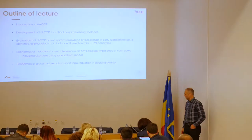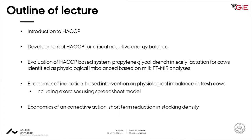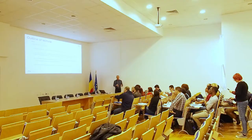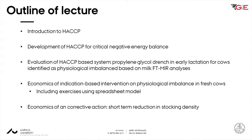The outline of the teaching is that first I will tell you about the HACCP concept — the very general thing, what is HACCP about? Then I will tell you about a study we have done to develop a HACCP concept for critical negative energy balance. Then we did an evaluation of this HACCP concept using the FT-MIR analysis, put it into a HACCP concept and tried it out in two real herds. The final two topics are economics of imbalanced cows, how to calculate that, and the economics of having a system to avoid it, plus the economics of one of the corrective actions from the HACCP concept.